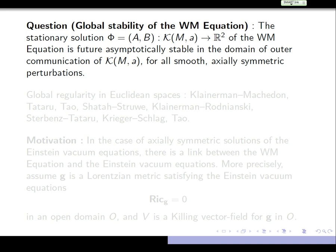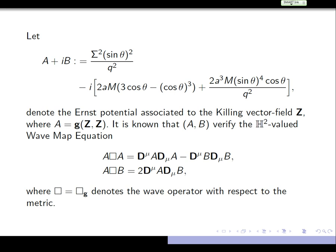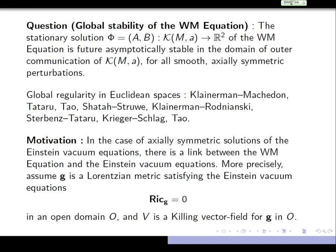The question one could raise is the global stability of the wave map equation. The global stability would say the following: we start with this stationary solution A, B, and we think of perturbations of the stationary solution. The question is whether this stationary solution A, B is stable. This is the solution — the Ernst potential associated with the Killing vector field Z in the Kerr space — regarded as a solution from the Kerr space to the hyperboloid.